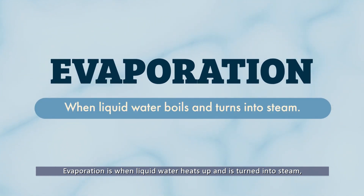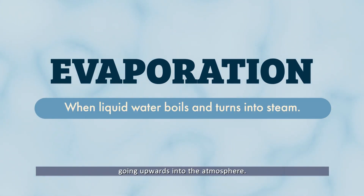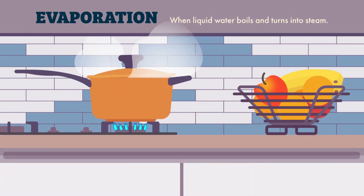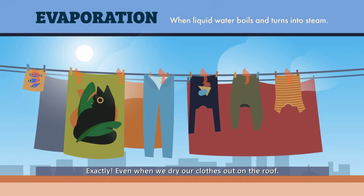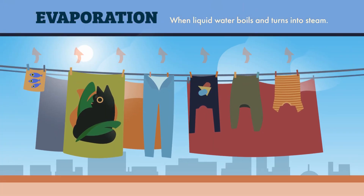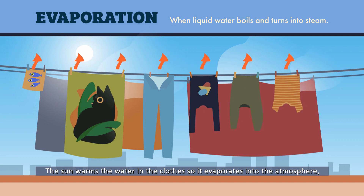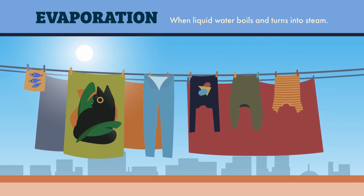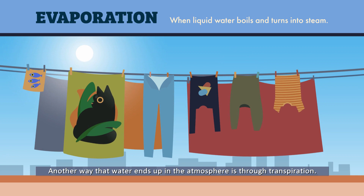Evaporation is when liquid water heats up and turns into steam, going upwards into the atmosphere — like when mom makes pasta, the water boils and turns into steam. Even when we dry our clothes on the roof, the Sun warms the water in the clothes so it evaporates into the atmosphere and the clothes dry.